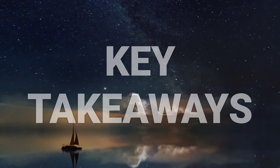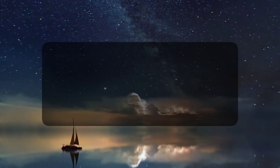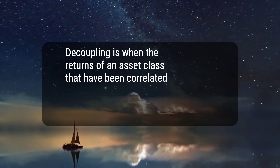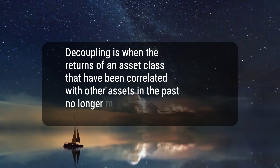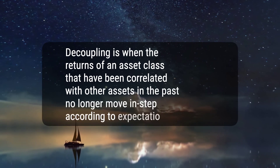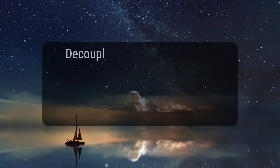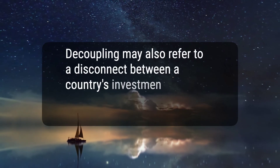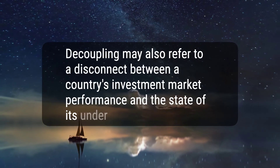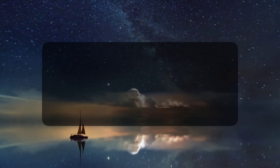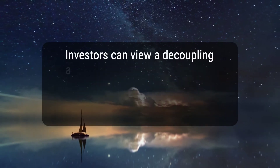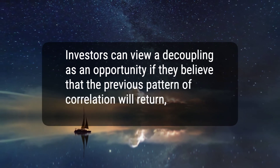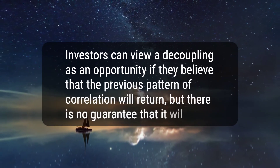Here are five key takeaways. 1. Decoupling is when the returns of an asset class that have been correlated with other assets in the past no longer move in step according to expectations. 2. Decoupling may also refer to a disconnect between a country's investment market performance and the state of its underlying economy. 3. Investors can view a decoupling as an opportunity if they believe that the previous pattern of correlation will return, but there is no guarantee that it will.